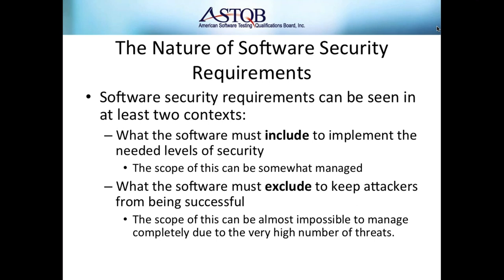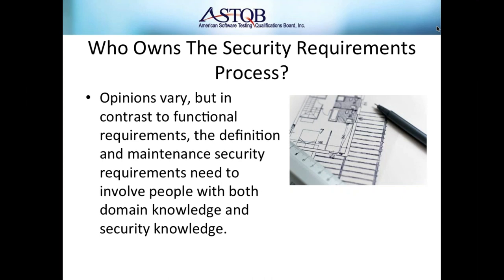Security requirements have two major focuses: first, what must be included to implement security defenses — this scope is manageable (e.g., 'we need input validation to prevent SQL injection'). Second, and more troubling, is what the software must exclude to keep attackers from being successful. With over 106,000 possible common weaknesses and vulnerabilities, the scope of exclusions is almost impossible to fully manage — you're dealing with an unbounded negative space.